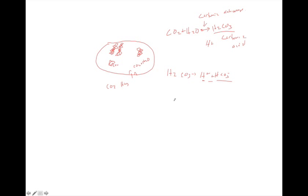As hydrogen ions accumulate inside the red blood cell, the interior becomes more positively charged. This causes chloride to shift inward into the cell — what we call the chloride shift. The chloride shift restores electroneutrality, balancing the charges inside the red blood cell. This happens in systemic capillaries as blood picks up CO2 and unloads O2.